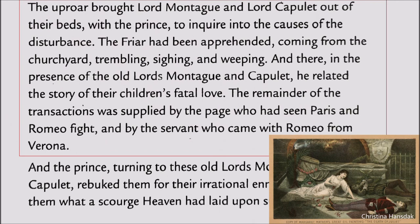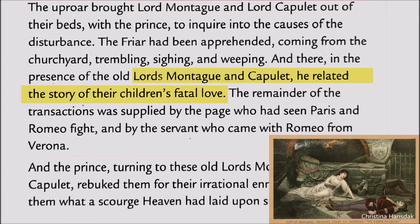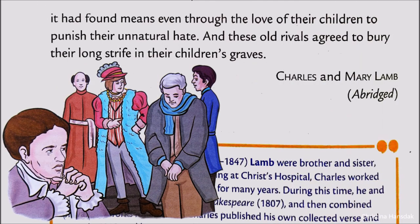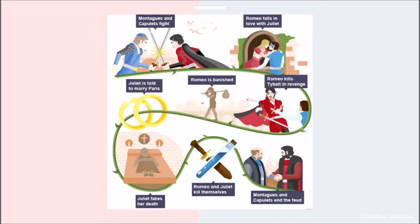This event brought Lord Capulet and Lord Montague out of their beds along with the Prince. The Friar came too, trembling, sighing, and weeping. He declared the fatal love of Romeo and Juliet in front of both families. The remaining matter was completed by the servant who had witnessed Paris and Romeo's fight. The Prince rebuked Lord Capulet and Lord Montague, saying that due to their enmity their children had lost their lives. The dead had tried to build peace between both families, but enmity had trampled it. The Prince told them to bury their enmities in their children's grave. And so the love story of Romeo and Juliet came to its end.